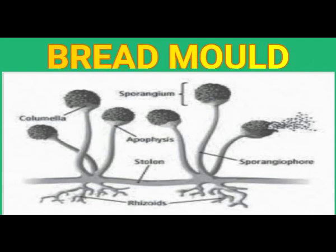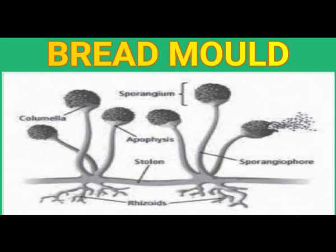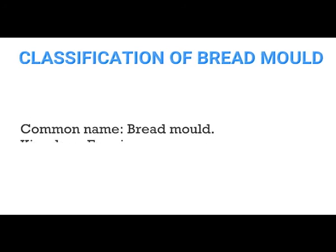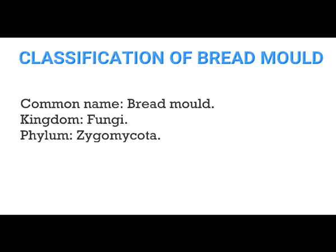In front of you is a labeled diagram of breadmold, labeled according to the external structure — what you observe when you are provided with a specimen of breadmold. We will now start the classification of breadmold.